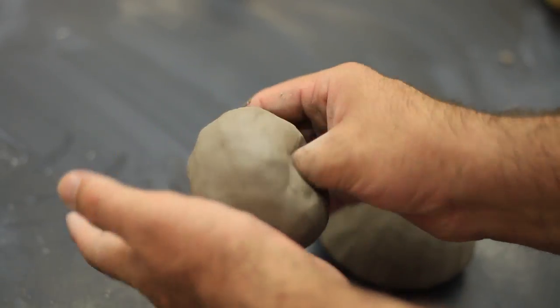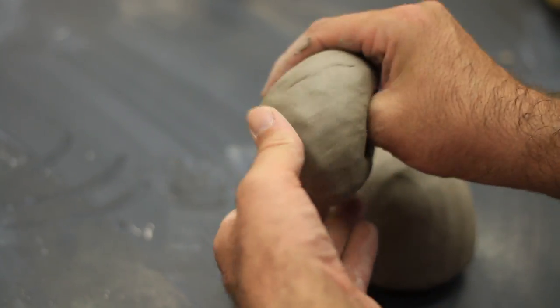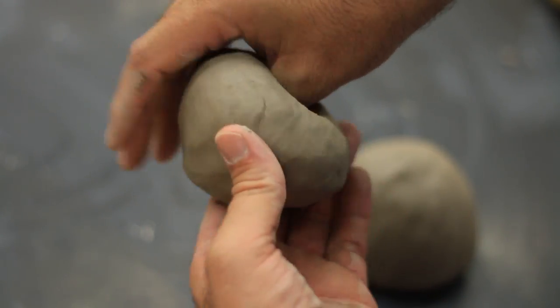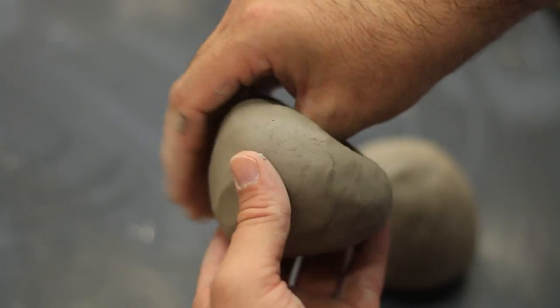You're going to continue by repeating the same process for your second lump of clay. Push in with the center with your thumb, begin pinching at the bottom, and then as you get the bottom thinned out, you work towards the middle and then towards the rim.